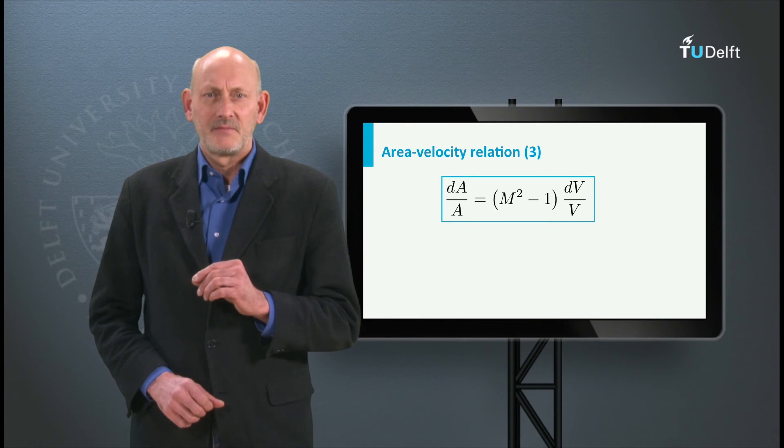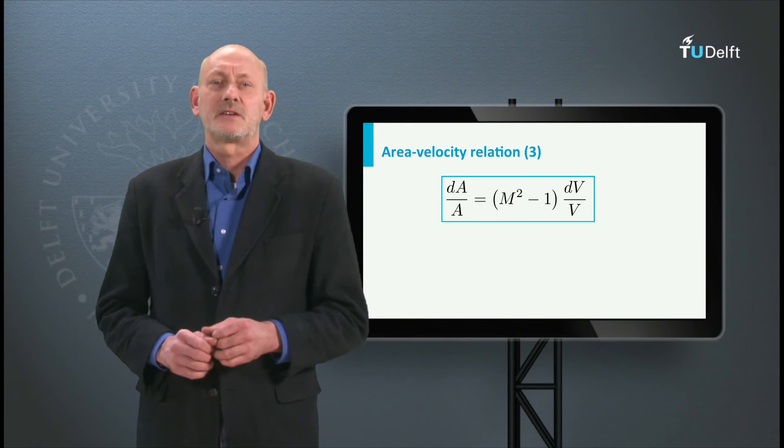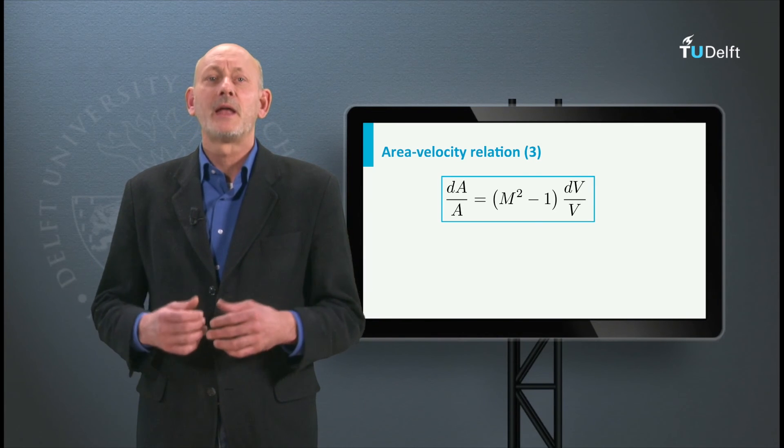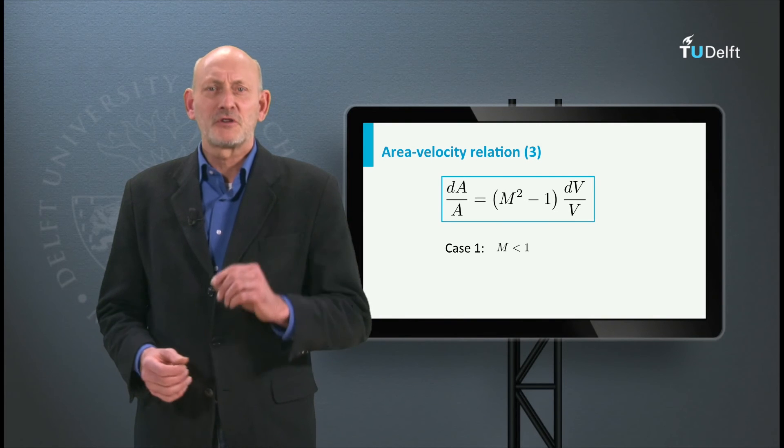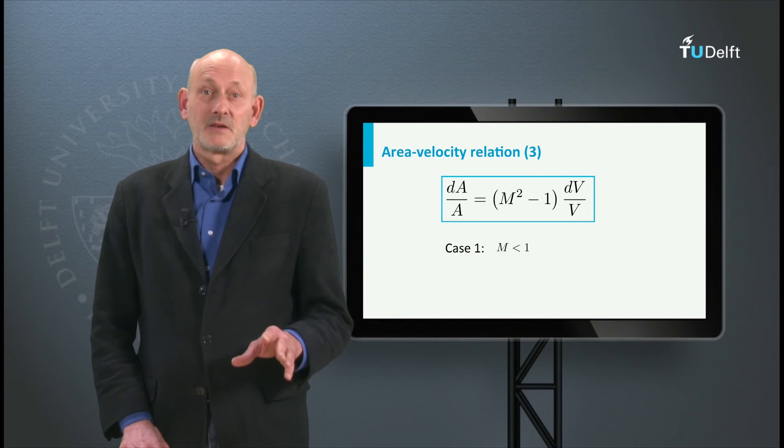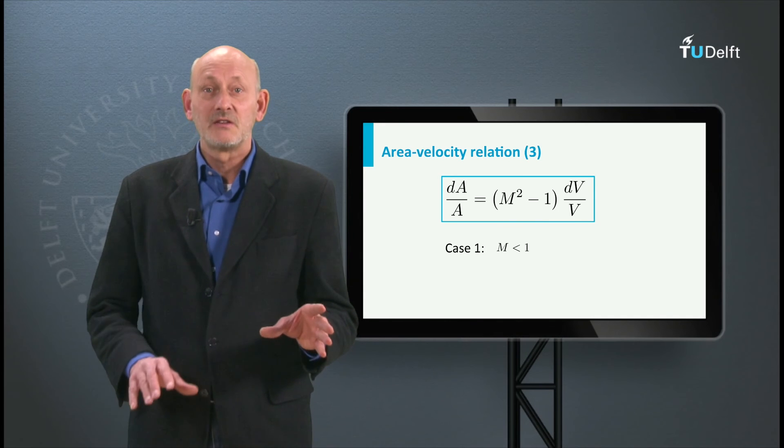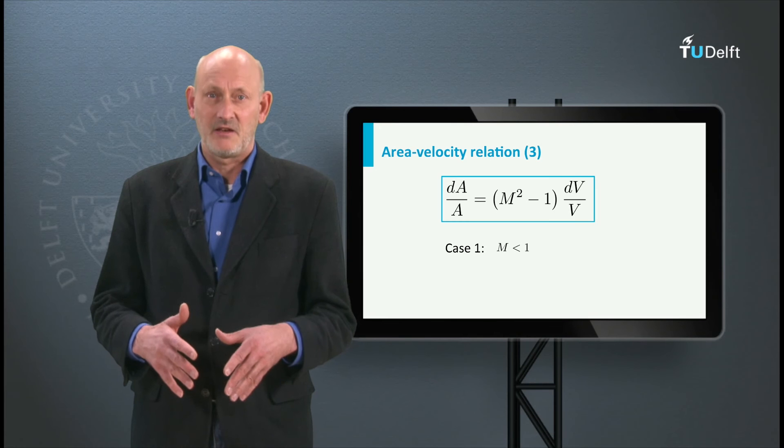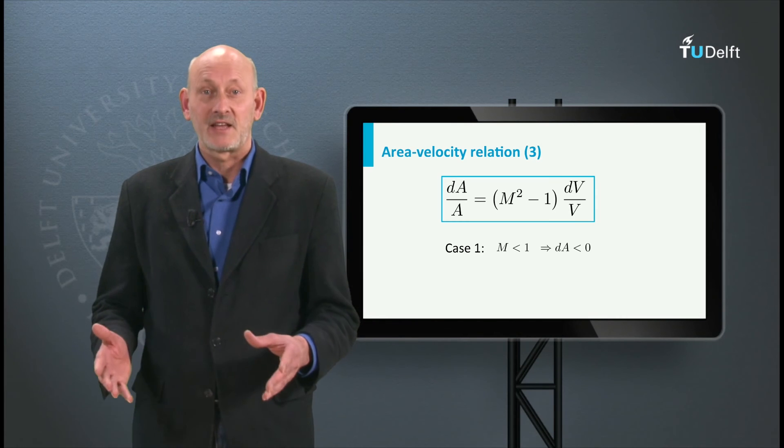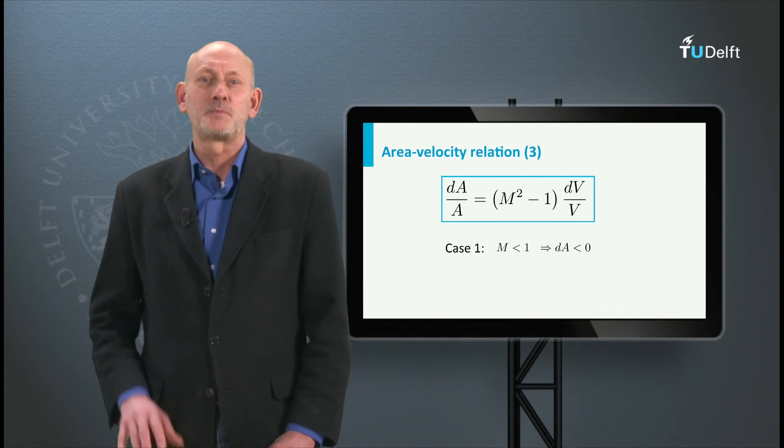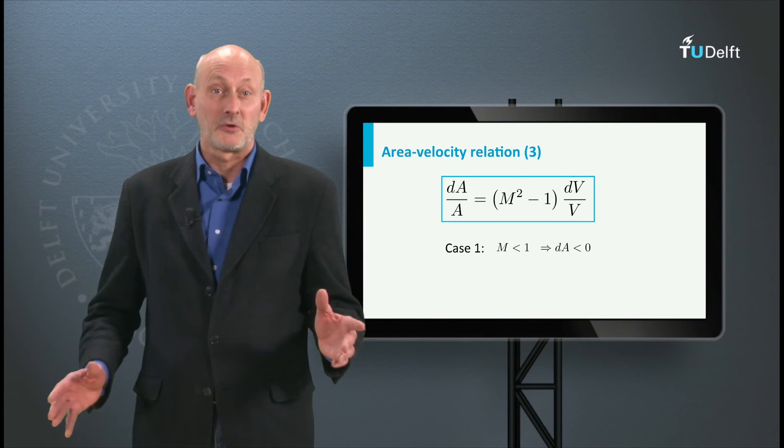Now what does it say? There are three cases to consider, M smaller than 1, M greater than 1 and M equal 1. First of all, suppose the Mach number is smaller than 1, then when the speed should increase, dV is positive. M squared minus 1 is negative, so dA should be negative. The area of the channel should decrease to increase the flow speed. This is just as we thought.